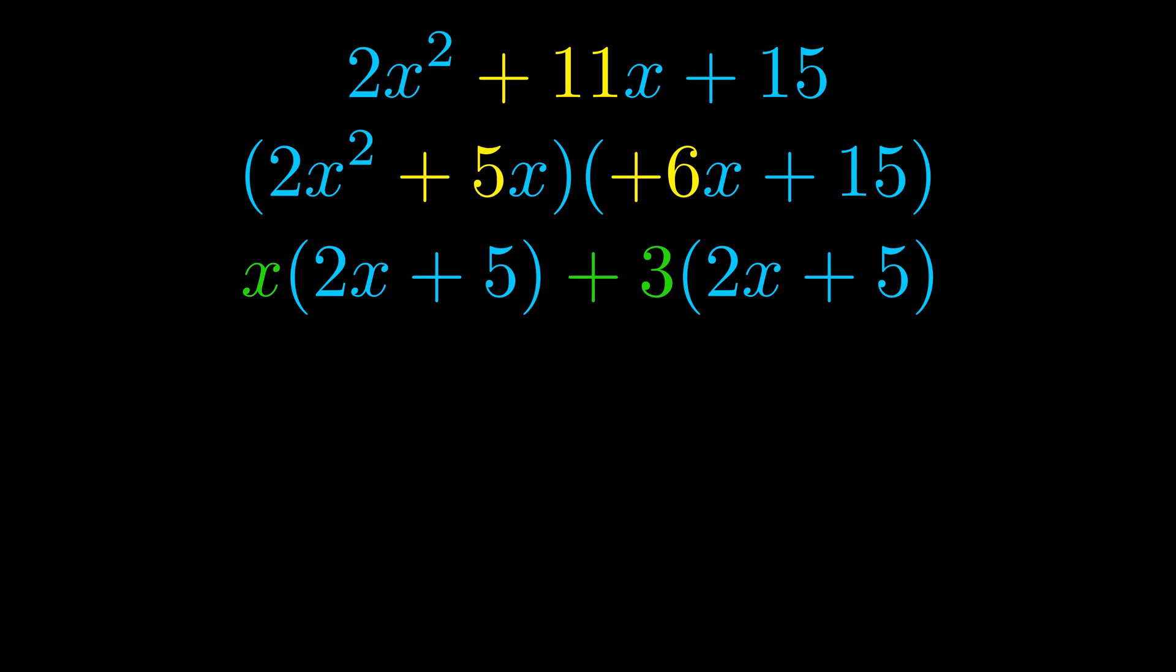Notice also how what remains inside of the parentheses is the same in both cases. The blue values are the same. Those blue values will become one of our factors and we will combine the two green values the GCFs that we pulled out to get the other one. And that is our fully factored equation.